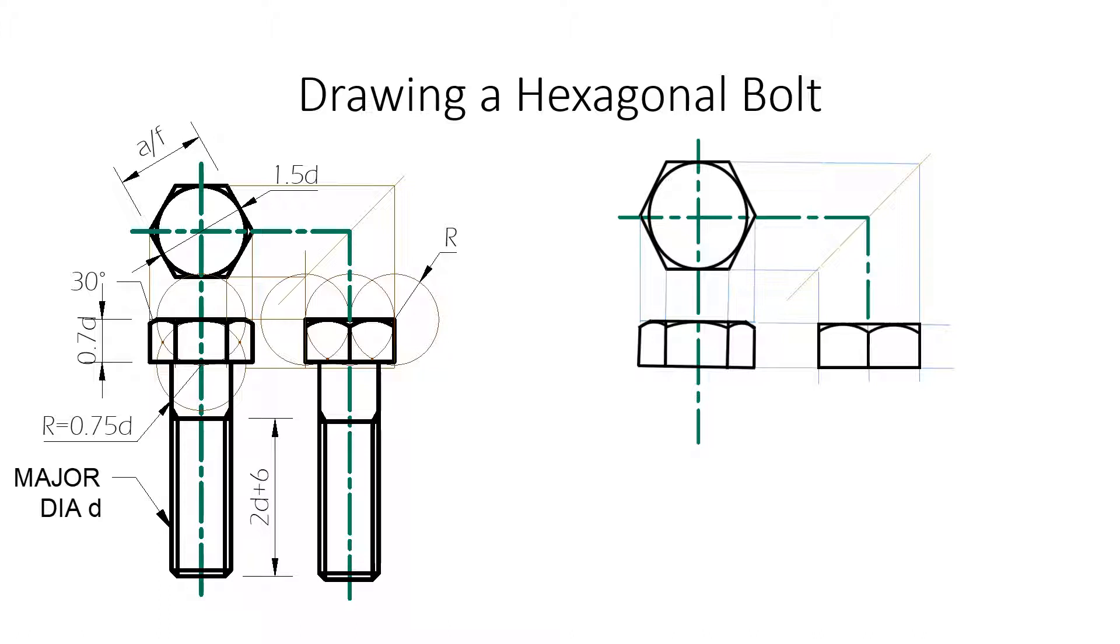This is for a bolt with the length up to 125 millimeters. The threaded portion is 2D plus 6, which in this case is going to be 2 times 10 plus 6, 26. It's going to be 10 millimeters, and we draw a 1 millimeter gap for the offset for the threading. To show the threading. And we just put that in there, and that's our bolt.